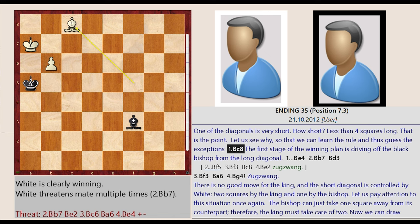One of the diagonals is very short. How short? Less than 4 squares long. That is the point. Let us see why, so that we can learn the rule and thus guess the exceptions.